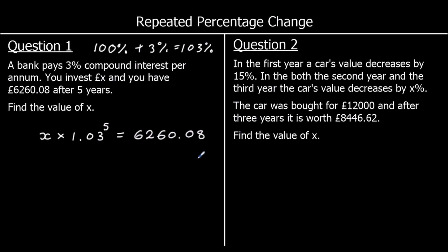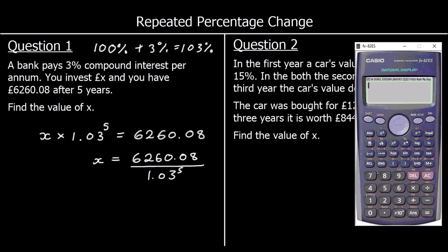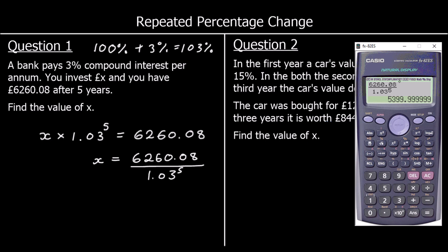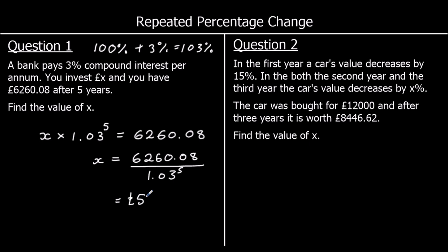To get X by itself, we're going to divide both sides by 1.03 to the power of 5. So X equals £6,260.08 divided by 1.03 to the power of 5. We'll just type that into the calculator, and that comes out as £5,399.9999. Rounding to two decimal places because it's money, that's £5,400.